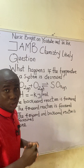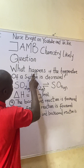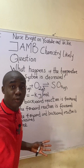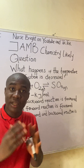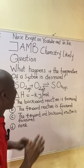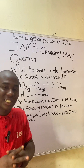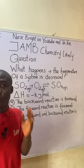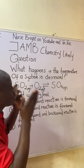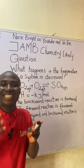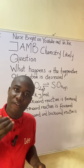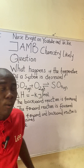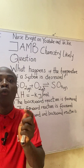Let us read the question together. The question says: what happens if the temperature of a system is decreased? This question is very easy — please watch closely as I solve it. As I'm solving, I'll be giving you insights concerning chemical equilibrium. First of all, we have external constraints that affect a reaction or a particular system at equilibrium.